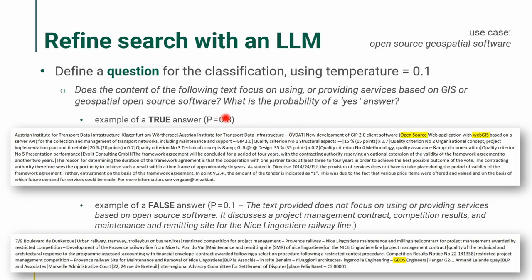The question we ask is: 'Does the content of the following text focus on using or providing services based on GIS or geospatial open source software? Tell me the probability of a yes answer.' Here's an example of a true answer with probability 0.8 — a procurement about developing a client application with an explicit condition to use open source and to build a web GIS. This is a false answer because we found 'geos,' which was a keyword, but here it's just the name of a company.